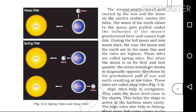The strong gravitational pull exerted by the sun and the moon on the earth's surface causes the tides. The sun and the moon have a gravitational force on the earth's surface. The water of the earth closer to the moon gets pulled under the influence of the moon's gravitational force and causes high tide.